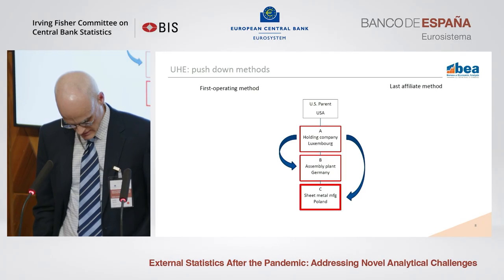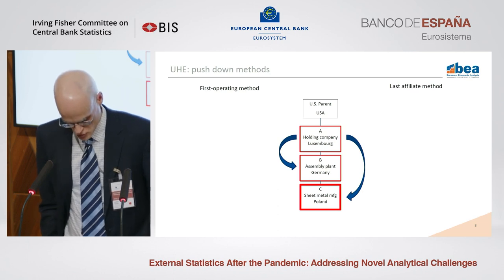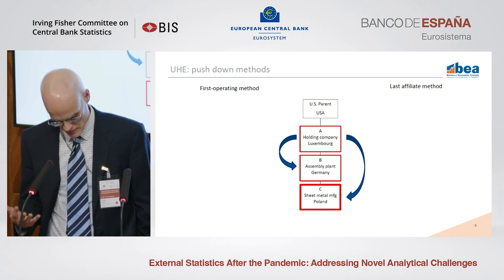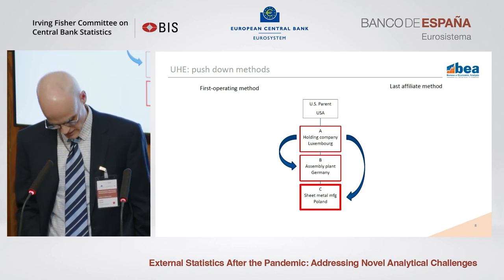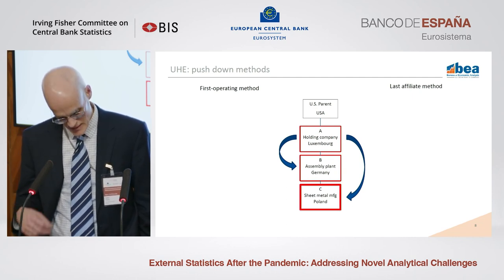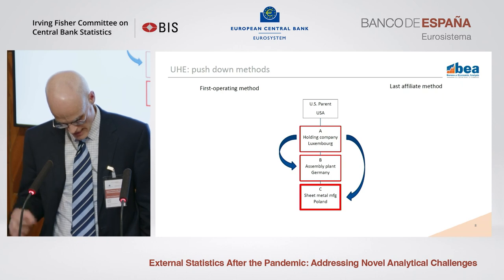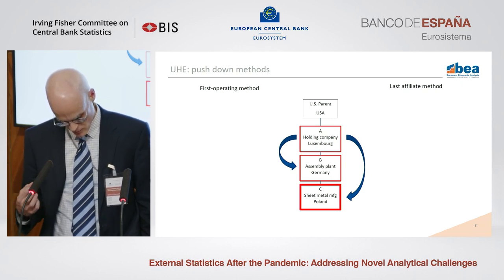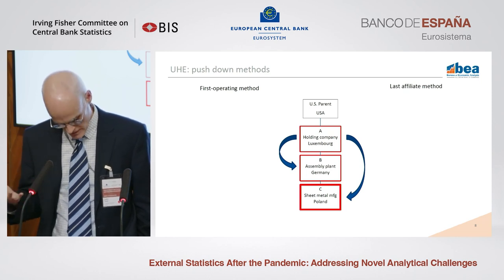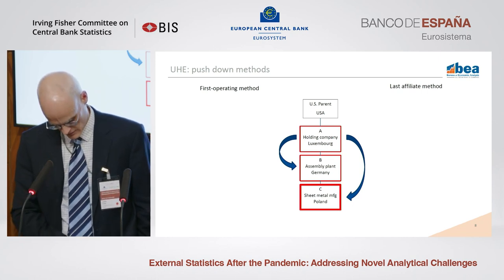In the first operating affiliate method, the position is reallocated from A to B — an assembly plant in Germany. This reallocation gives data users more information about where productive activities are taking place, but it does ignore entity C in Poland. In the last affiliate method, the position from A is reallocated to C — a sheet metal manufacturing plant in Poland. This method ignores affiliate B in Germany, even if it's larger, but provides more information than recording the entire investment in Luxembourg.